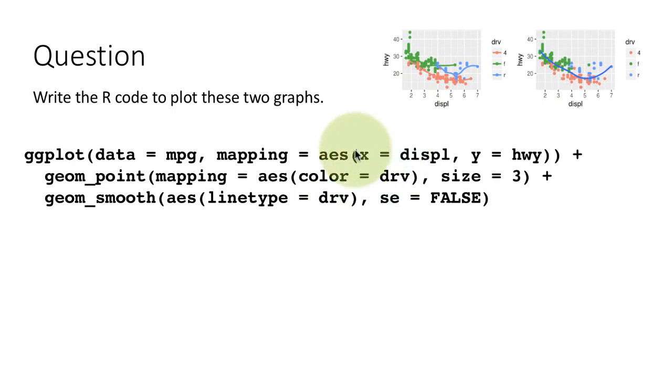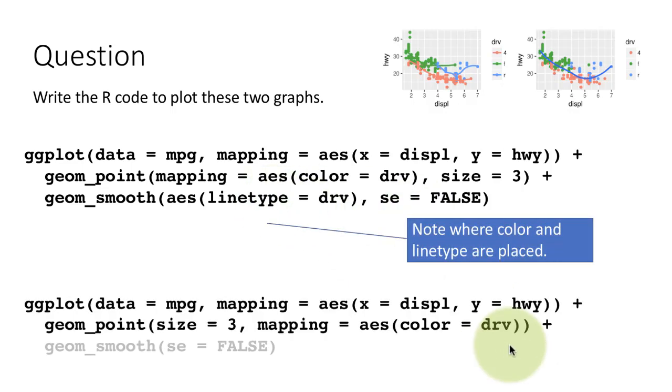And, notice that we chose to map the x and y aesthetic at the ggplot level because that is common to both of the layers. And, the color aesthetic we put only in geom_point because that applies only to geom_point. And, the linetype aesthetic applies only to geom_smooth. So, we put that only in geom_smooth. This is very good practice. That putting common aesthetics in ggplot and putting aesthetics specific to certain layers only in their layers. That's a good idea. The code for the second thing is going to look almost identical except that geom_smooth is going to have only se equals false. No linetype because there is only one line.